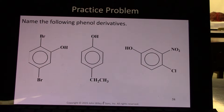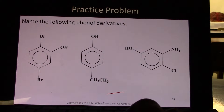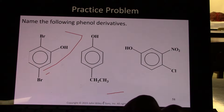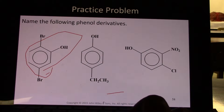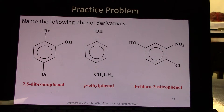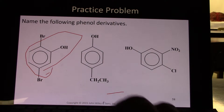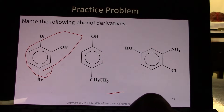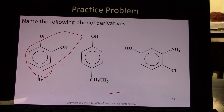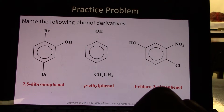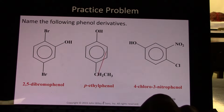Name the following phenol derivatives. Here is our phenol, and we have a bromine coming off of carbons 2 and 5, so we have 2,5-dibromophenol. We come over here, we have an ethyl group coming off of carbon 4: 4-ethylphenol, or we can say para, because it's in the para position. Both would be correct.